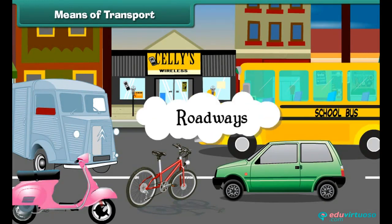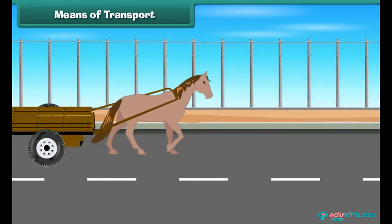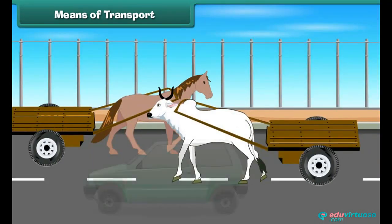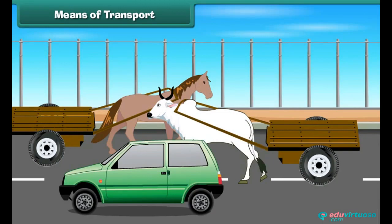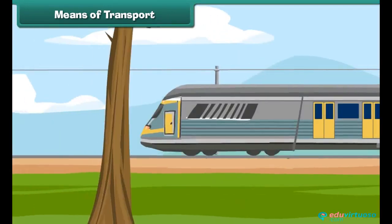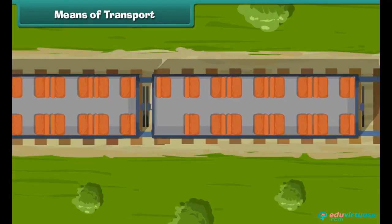What is meant by the term roadways? A roadway is a thoroughfare route or the way between two places which typically has been improved to allow travel by some conveyance, including a horse, a cart or a motorized vehicle.